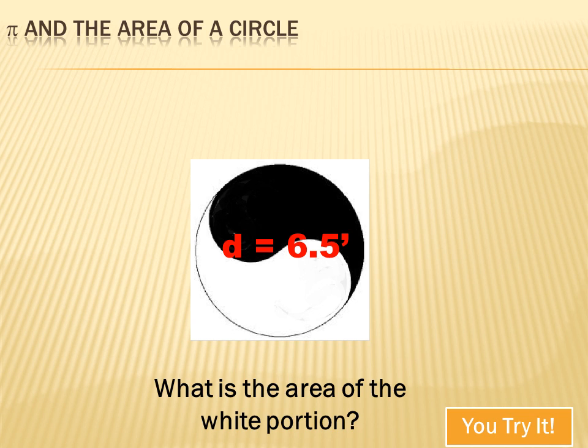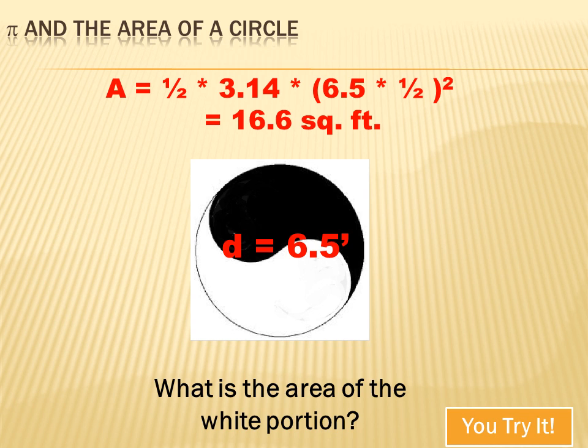This one looks tricky, but it's not really that tough. That symbol that's breaking up the circle looks like it divides it in half, and in fact it does. So the area would be one-half pi r squared. Now the other trick is that I'm giving you the diameter and not the radius. So you have to take half of the diameter to get the radius. So the area equals one-half, that represents the white portion, times pi times one-half the diameter squared. And that equals 16.6 square feet.